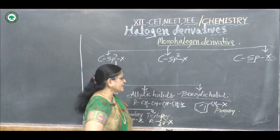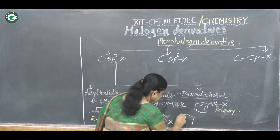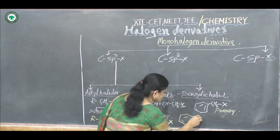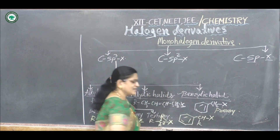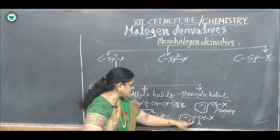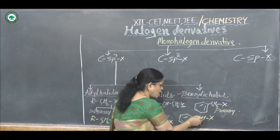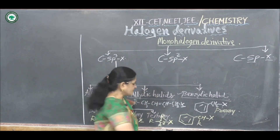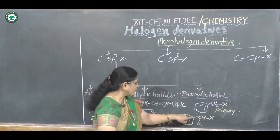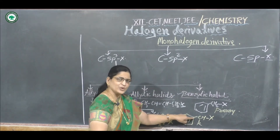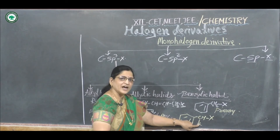For secondary benzylic halides, consider a benzene nucleus with a CHR group and halogen X. The halogen is bonded to a carbon atom attached to two carbon atoms — one carbon of the benzene nucleus and one carbon of an alkyl group.